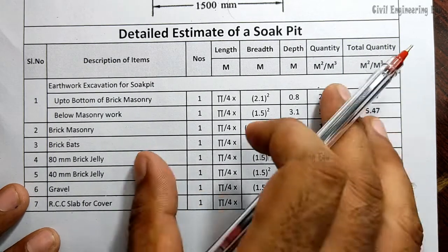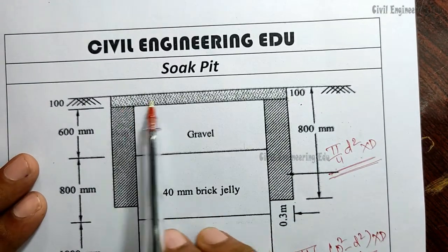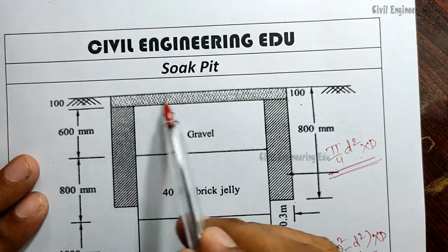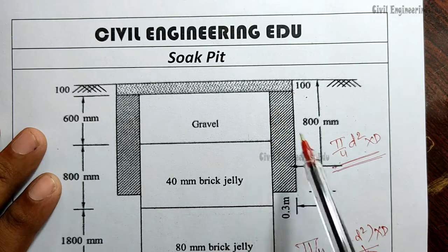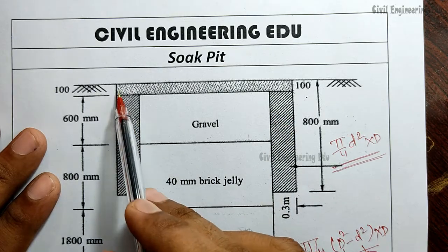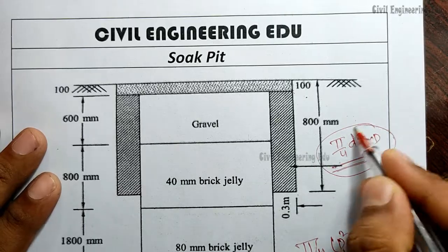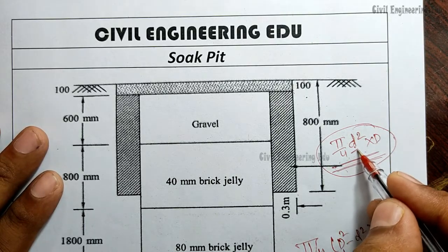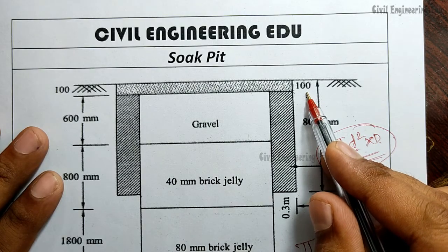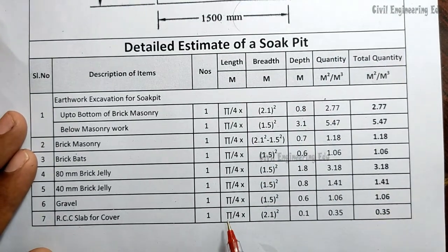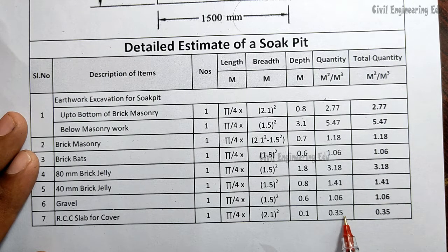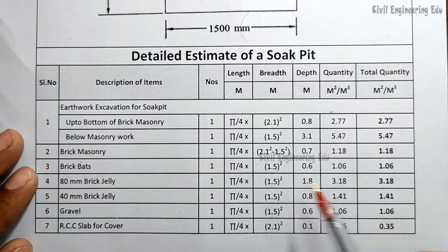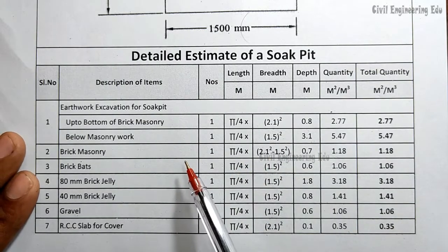For the RCC slab cover, the diameter is 2.1m because the internal diameter is 1.5m plus 300mm on each side. Using the same formula pi/4 × D² × depth, with D = 2.1m and depth = 100mm (0.1m), we get a quantity of 0.35 cubic meters. That is the procedure for calculating the complete estimate of a soak pit.